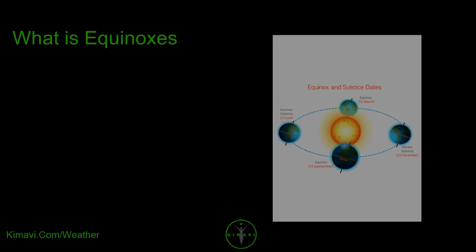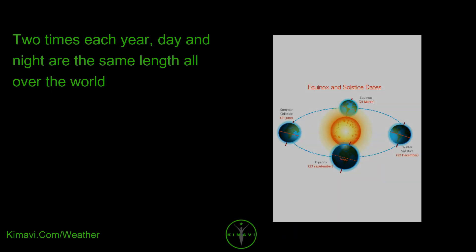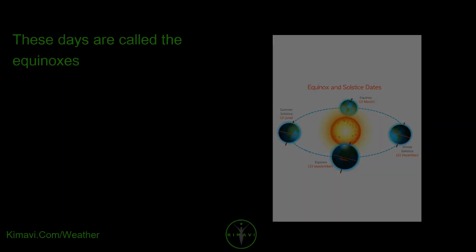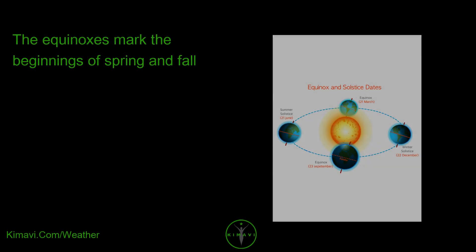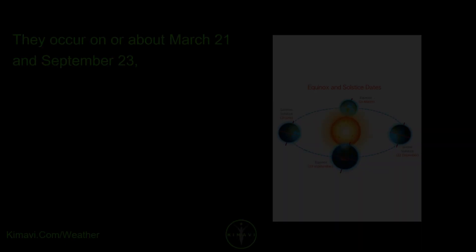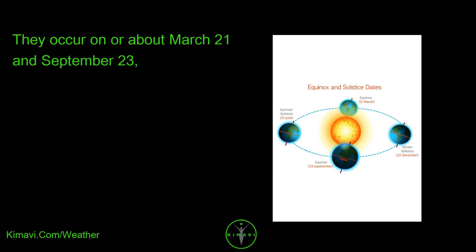What are equinoxes? Two times each year, day and night are the same length all over the world. These days are called the equinoxes. The equinoxes mark the beginnings of spring and fall. They occur on or about March 21st and September 23rd.